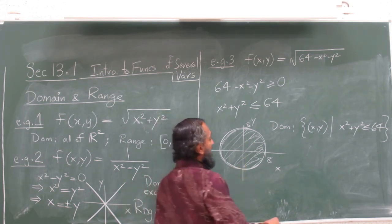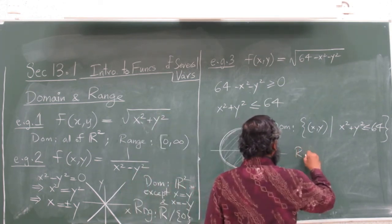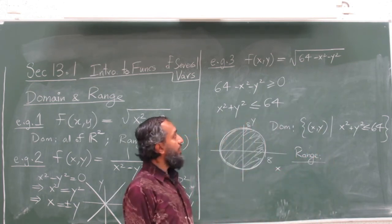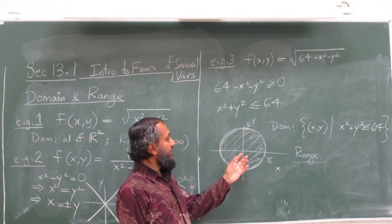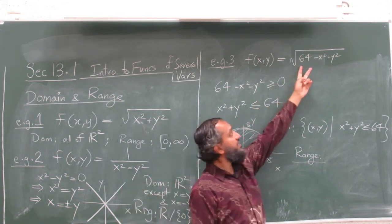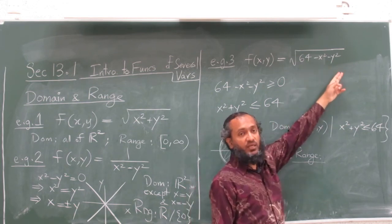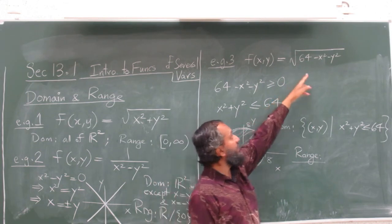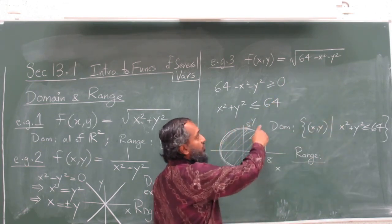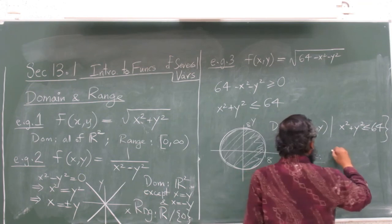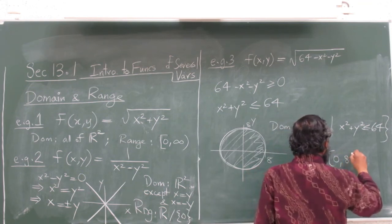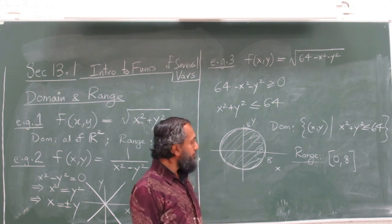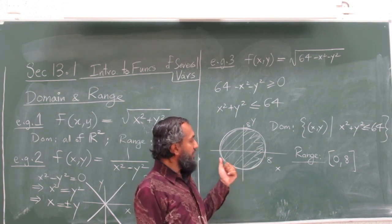The range is a little trickier. The biggest the inside of this expression can be is 64, when x and y are both 0, so the square root of 64 is 8. As x squared plus y squared approaches the edge of the circle, it goes towards 0. So the range is from 0 to 8.